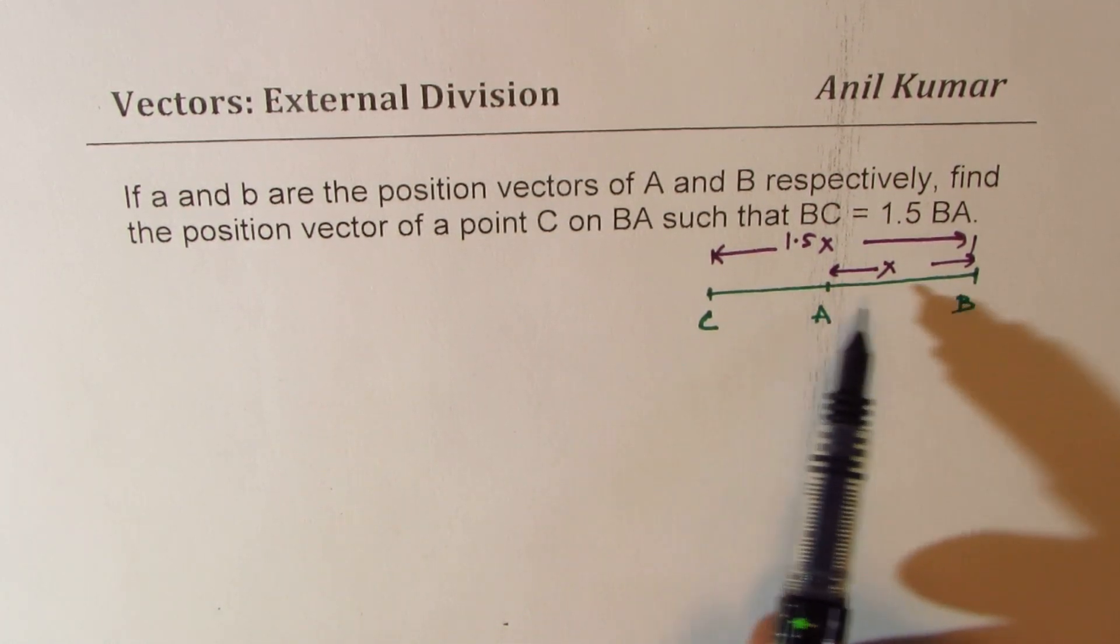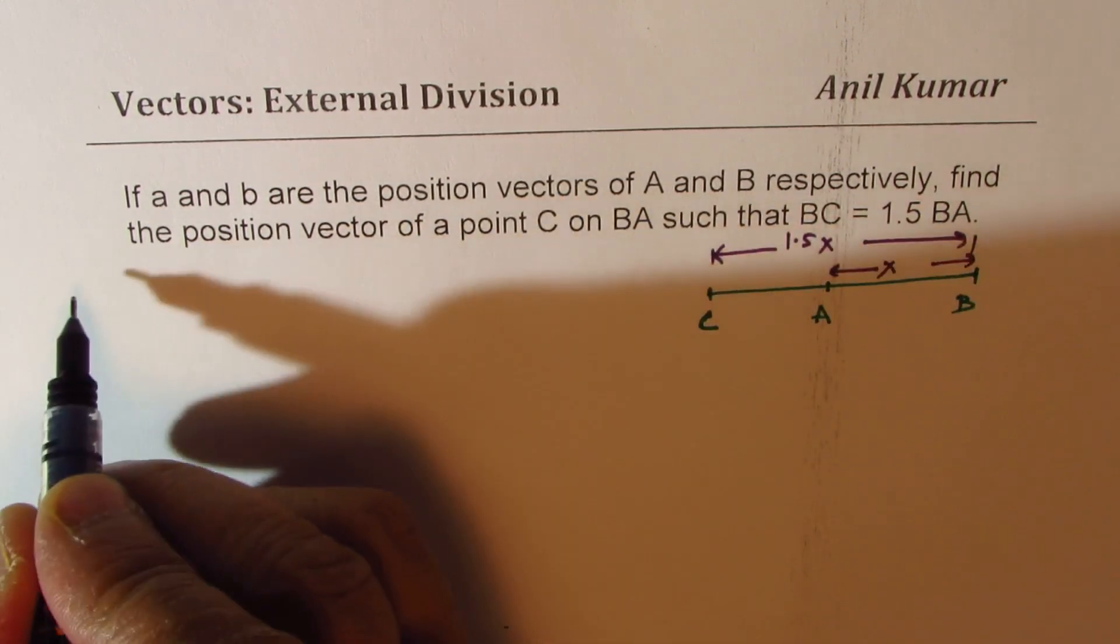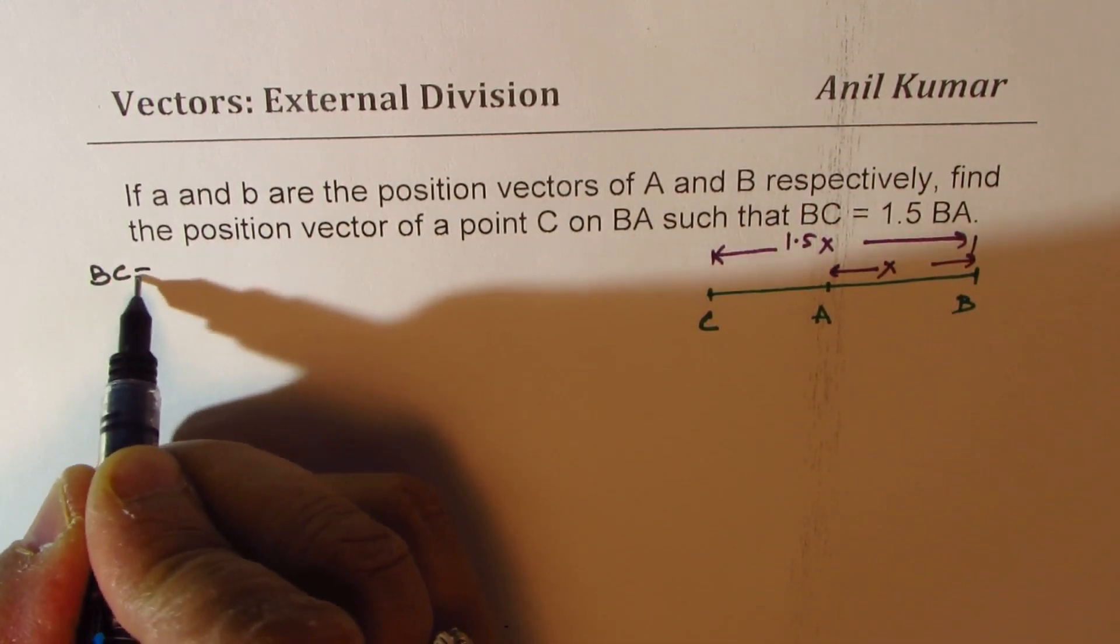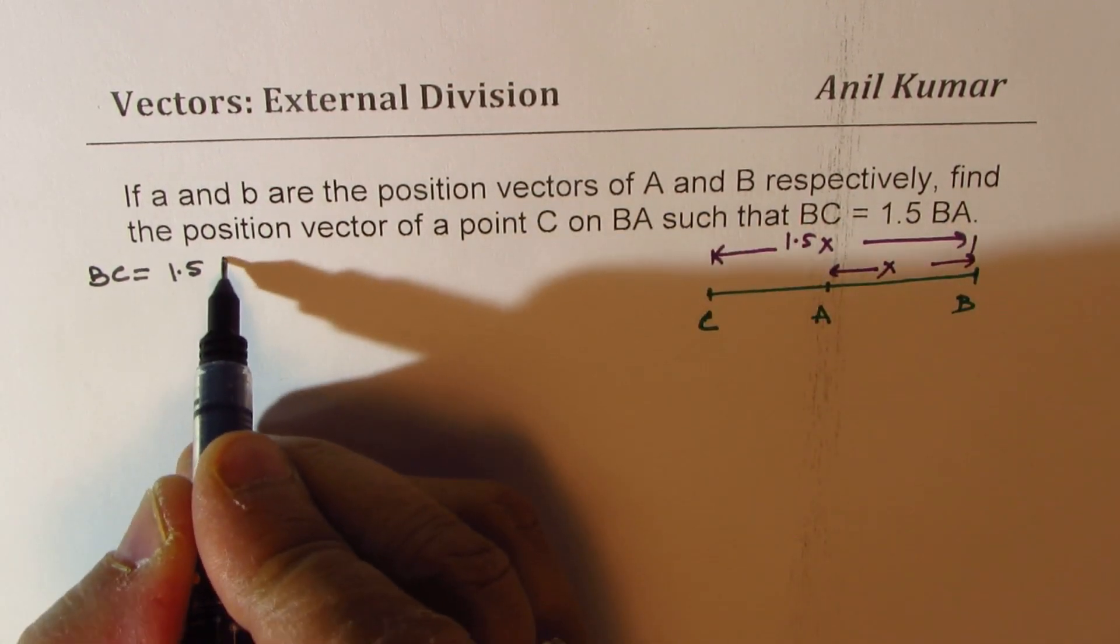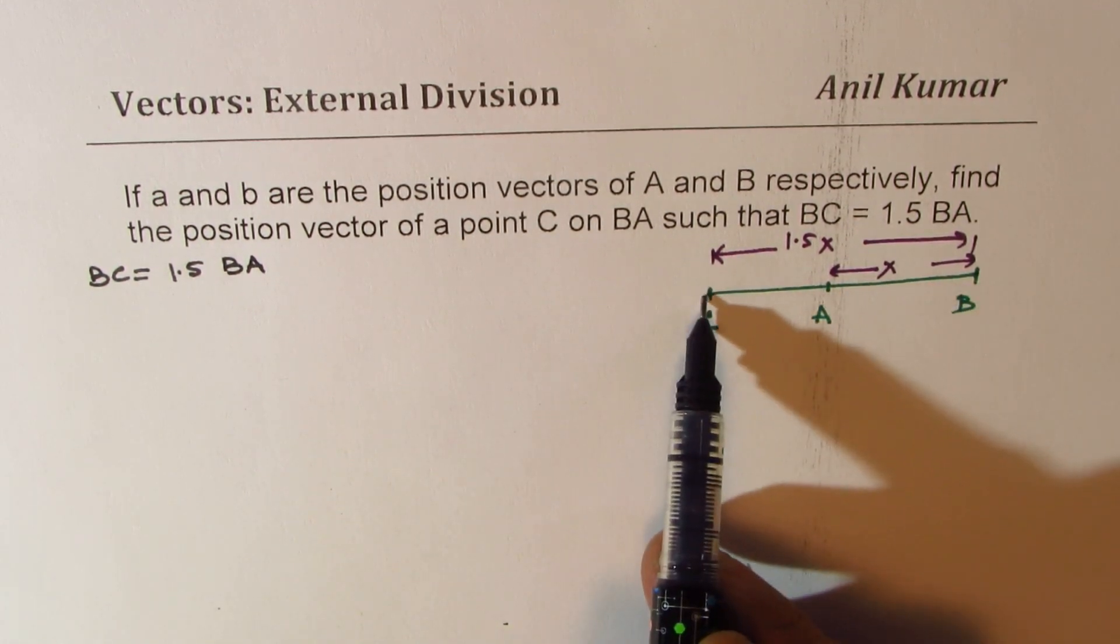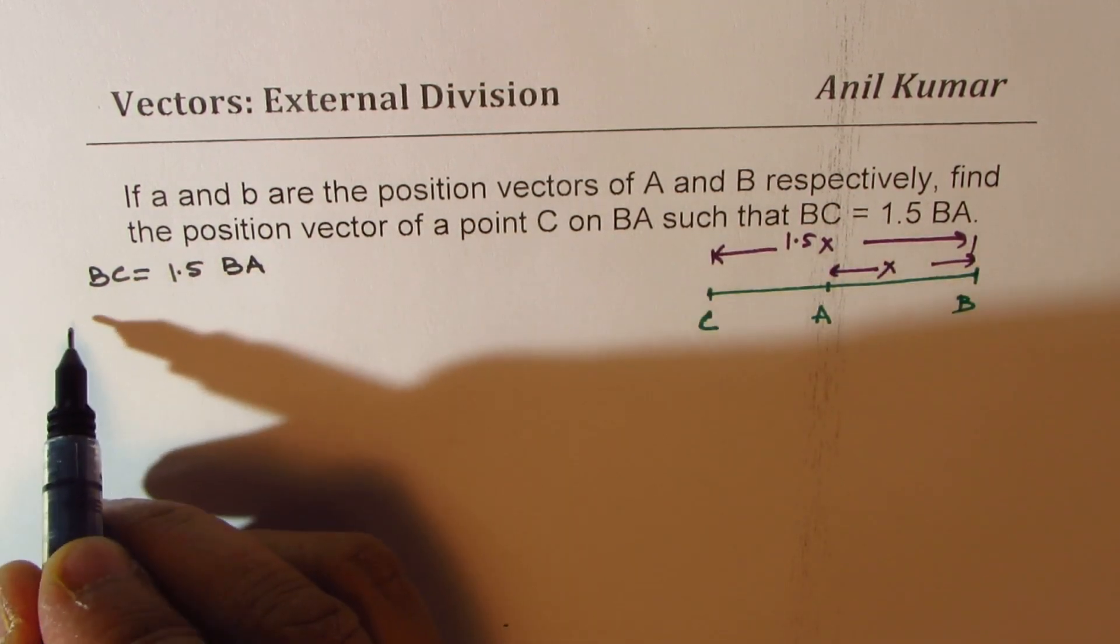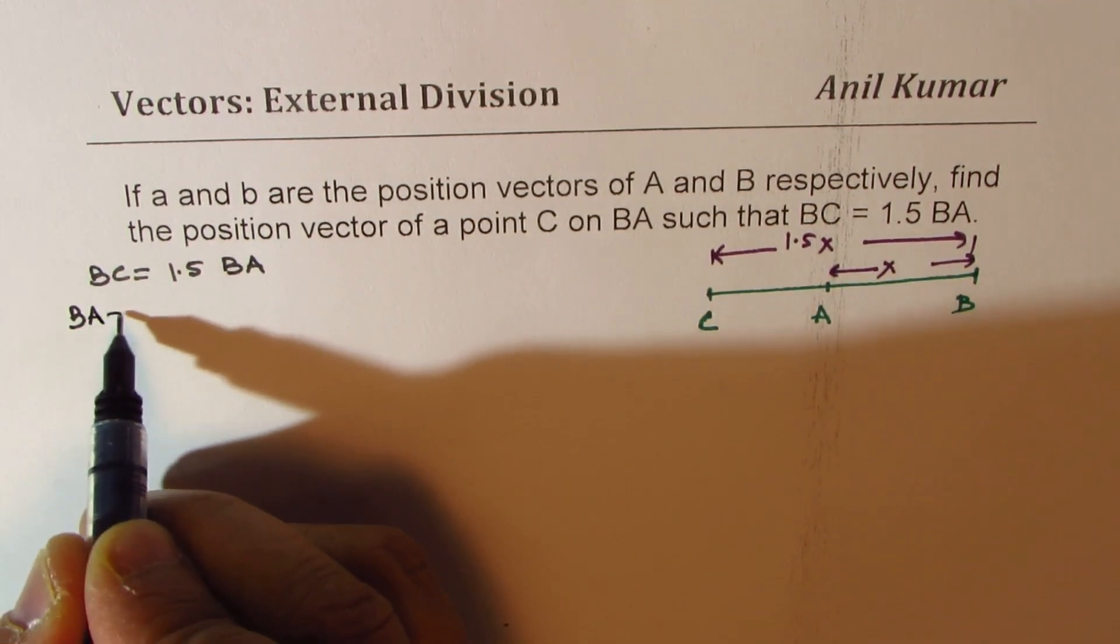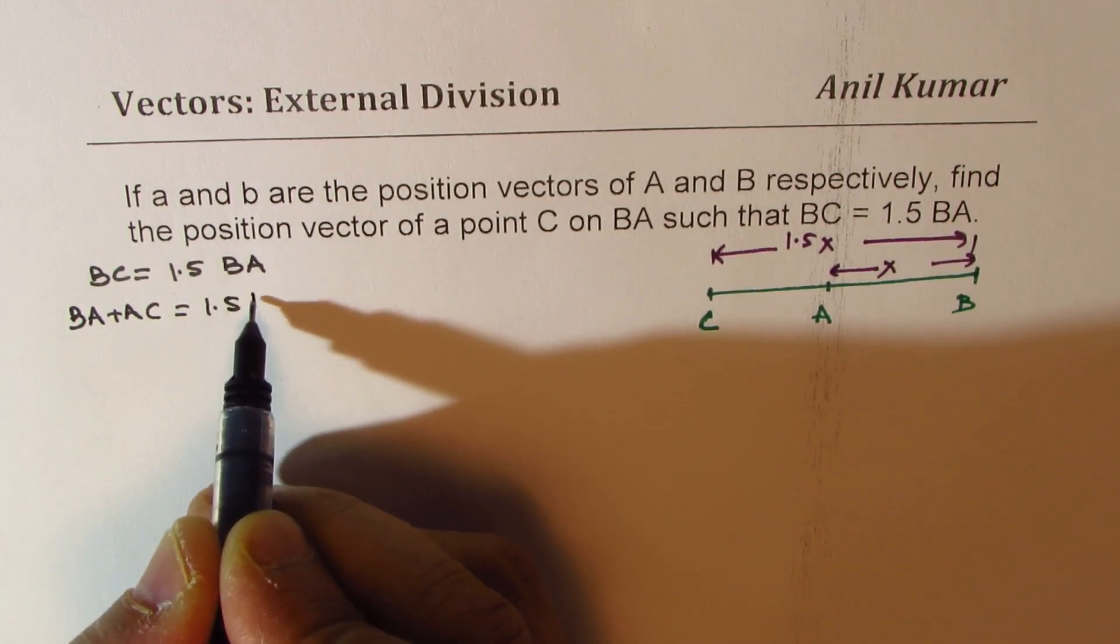So in this particular case, we are given that BC is 1.5 times BA. So we could write BC as combination of BA and AC. So BC could be written as BA plus AC, which is 1.5 times BA.